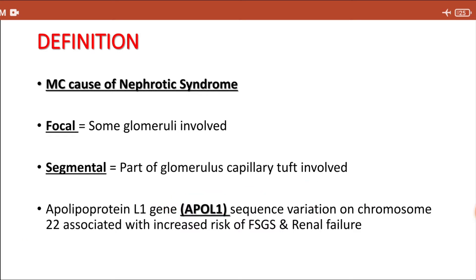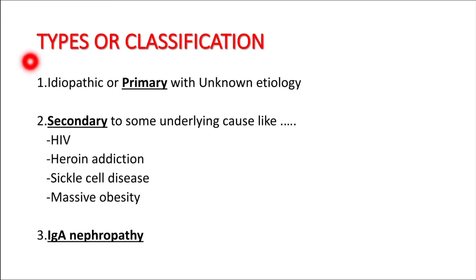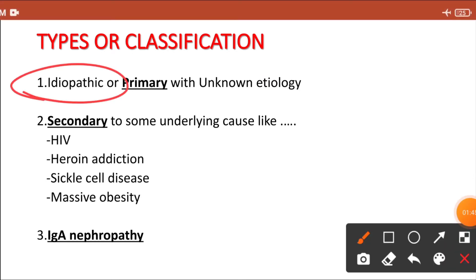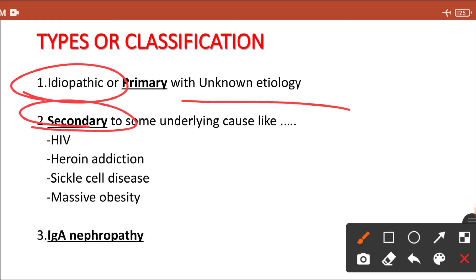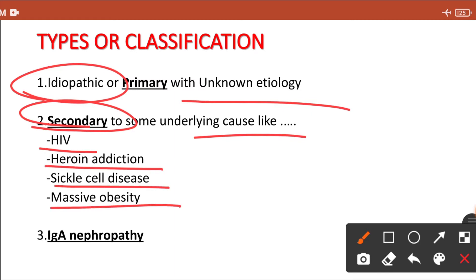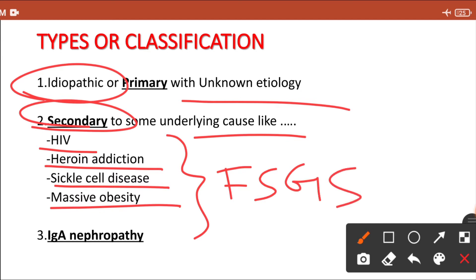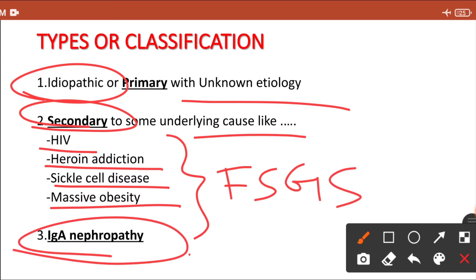There are five types or classifications of focal segmental glomerulosclerosis. The first is idiopathic or primary, in which there is no known etiology. The second type is secondary to an underlying cause — the secondary diseases associated with FSGS are HIV, heroin addiction, sickle cell anemia, and massive obesity. These four clinical conditions are associated with FSGS.